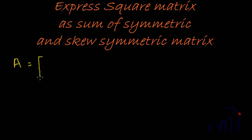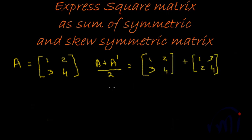If A is equal to 1, 2, 3, 4 just any random square matrix, then the symmetric part would be A plus A dash by 2 which is given by 1, 2, 3, 4 which is equal to the whole thing multiplied by half. So, half which will be equal to 1 by 2 of 2, 5, 5, 8 which is equal to 1, 5 by 2, 5 by 2 and 4.